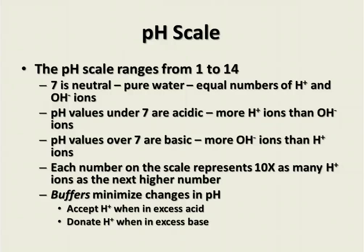An important thing to realize about the pH scale is that each number represents 10 times as many hydrogen ions as the next higher number. For instance, a pH of 4 has 10 times as many hydrogen ions as a pH of 5. So every step down the scale represents 10 times more hydrogen ions. In living systems, extreme pH — either too acidic or too basic — can be very harmful. Organisms need to maintain a relatively stable pH to maintain homeostasis within the cell.